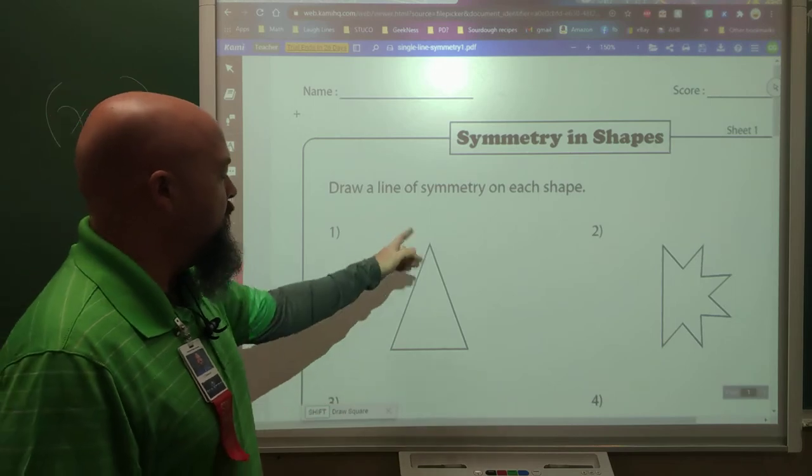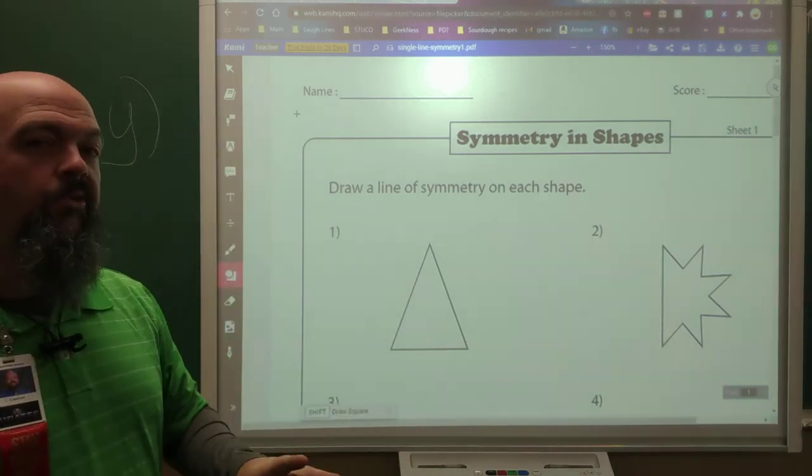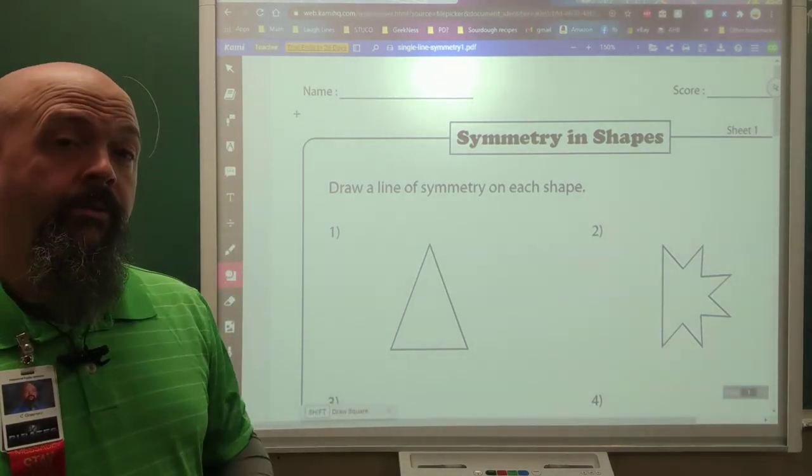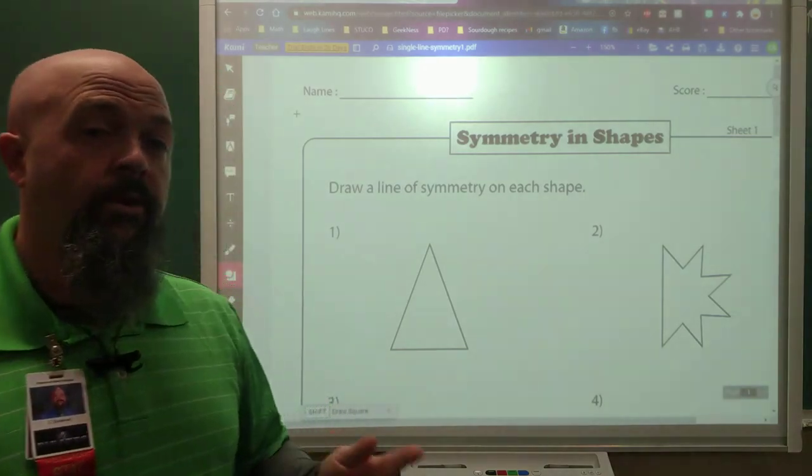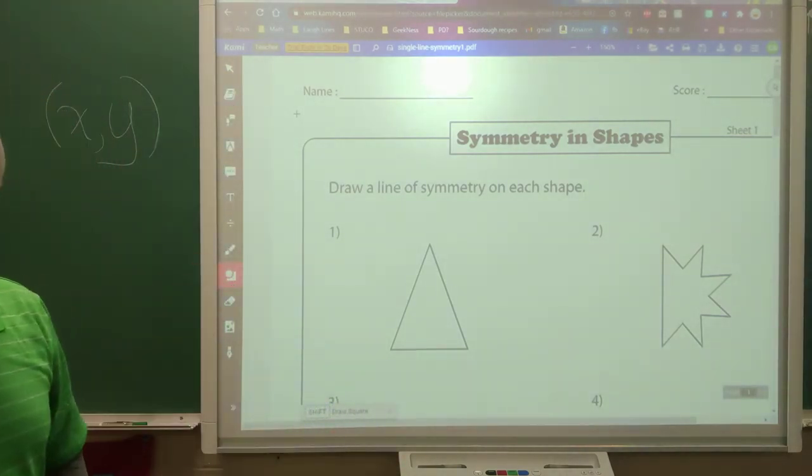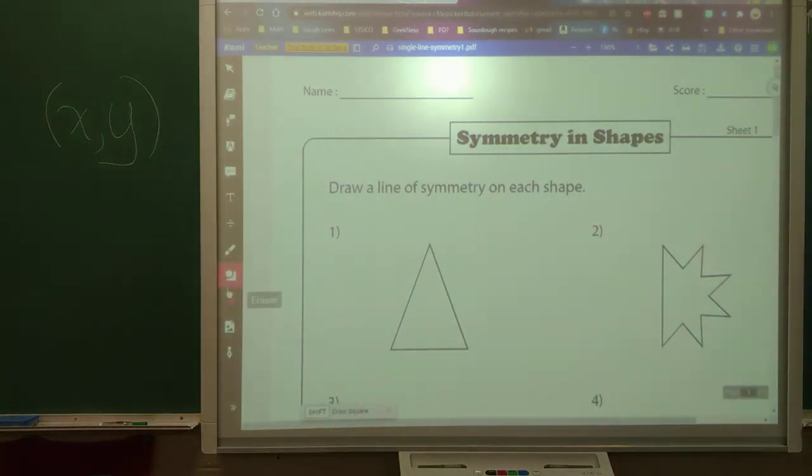Right off the get bat, we have an isosceles triangle. Isosceles means two lines equal. Not all three. So, since there's only two lines that are equal, not all three, there's only going to be one line of symmetry on that one.